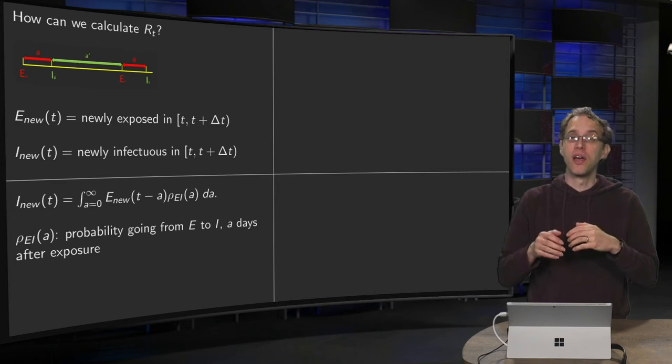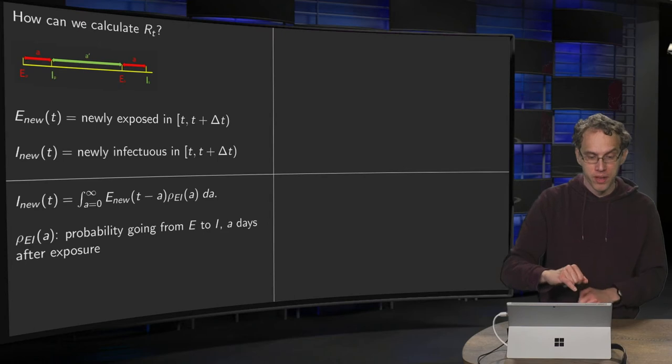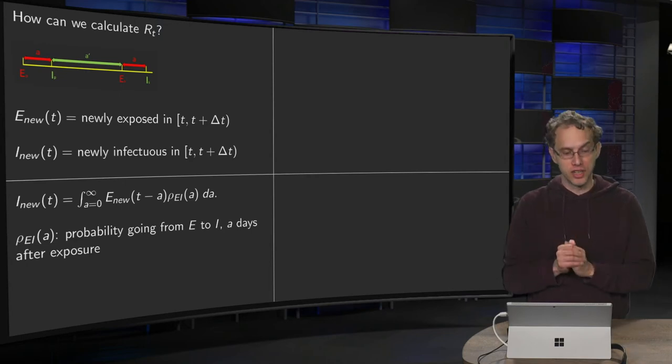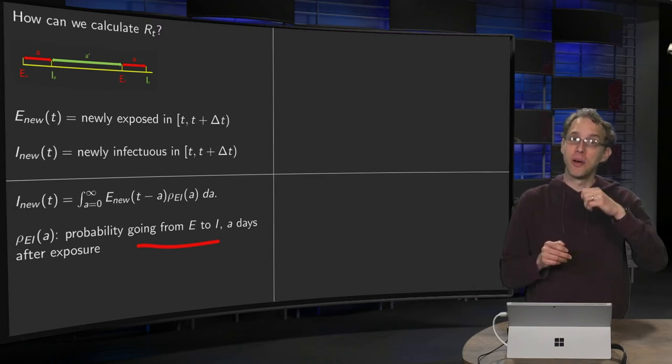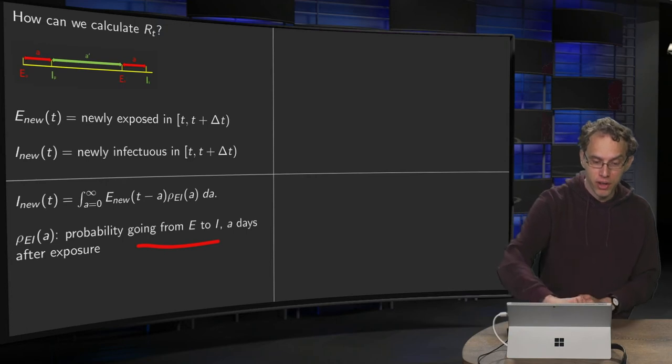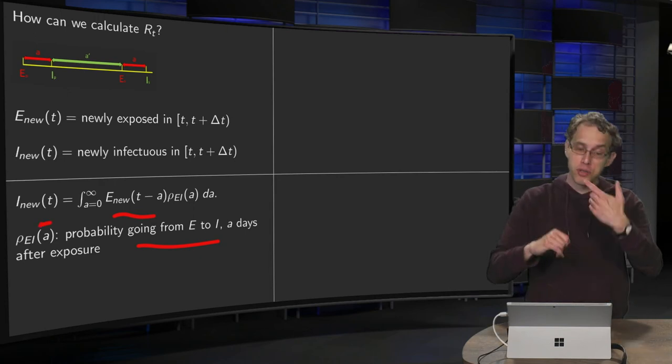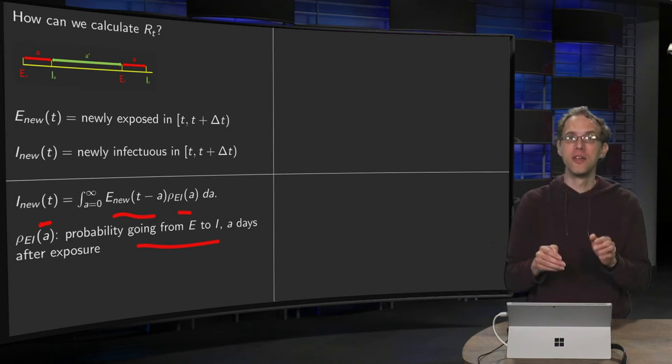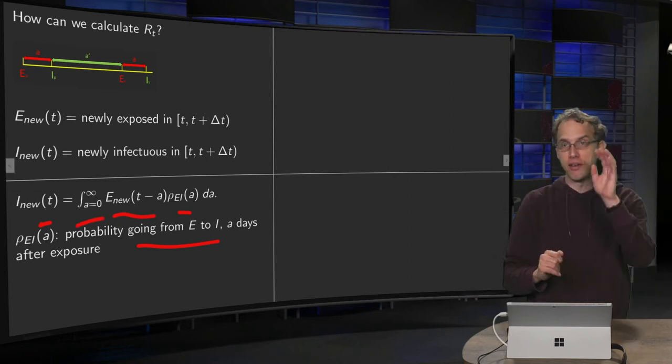So how can we compute now the newly infected as a function of time in terms of the newly exposed? Well, then we need to have some probability distribution, rho_ei of a, which gives us the probability of going from E to I after a days. So how many infectious people do we have? Well, you have the newly exposed a days earlier than t times the probability that after exactly a days, you move from E to I. So that's the, and then you have to sum, of course, of all possibilities of a, a from zero to infinity.